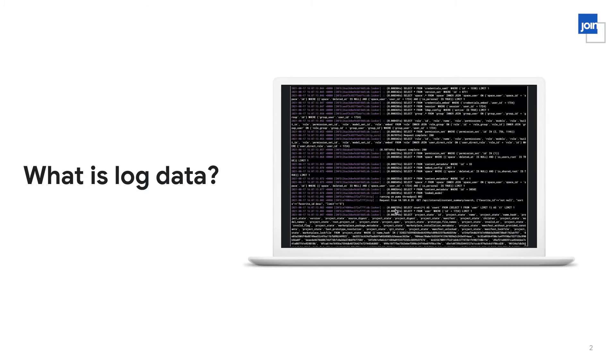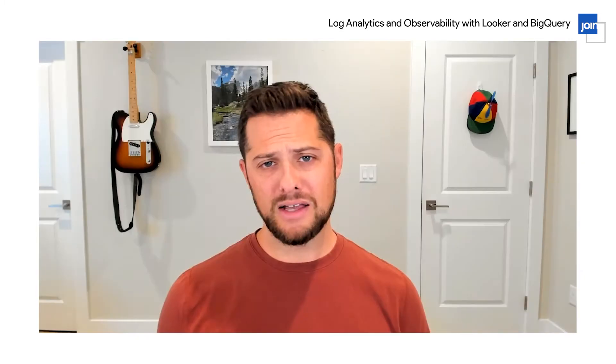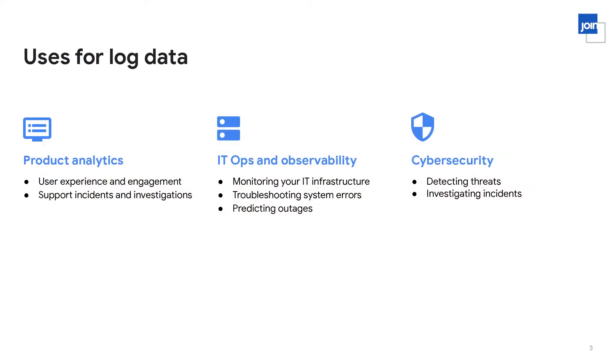So first off, let's do a quick level set. What is log data? A log is basically a stream of events coming from a machine like an IT server, an application, a network router, or an IoT device. So everything that these applications do creates an event inside of a log. And there's a lot of uses for this data within an organization. Increasingly, we're finding that many companies want to put business logic on top of this data.